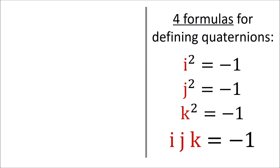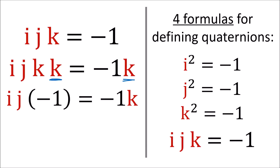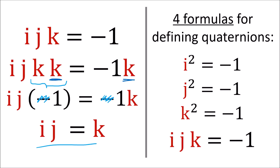For example, if we take the last formula and multiply both sides by k on the right, since k squared equals negative 1, we can derive i times j equals k.